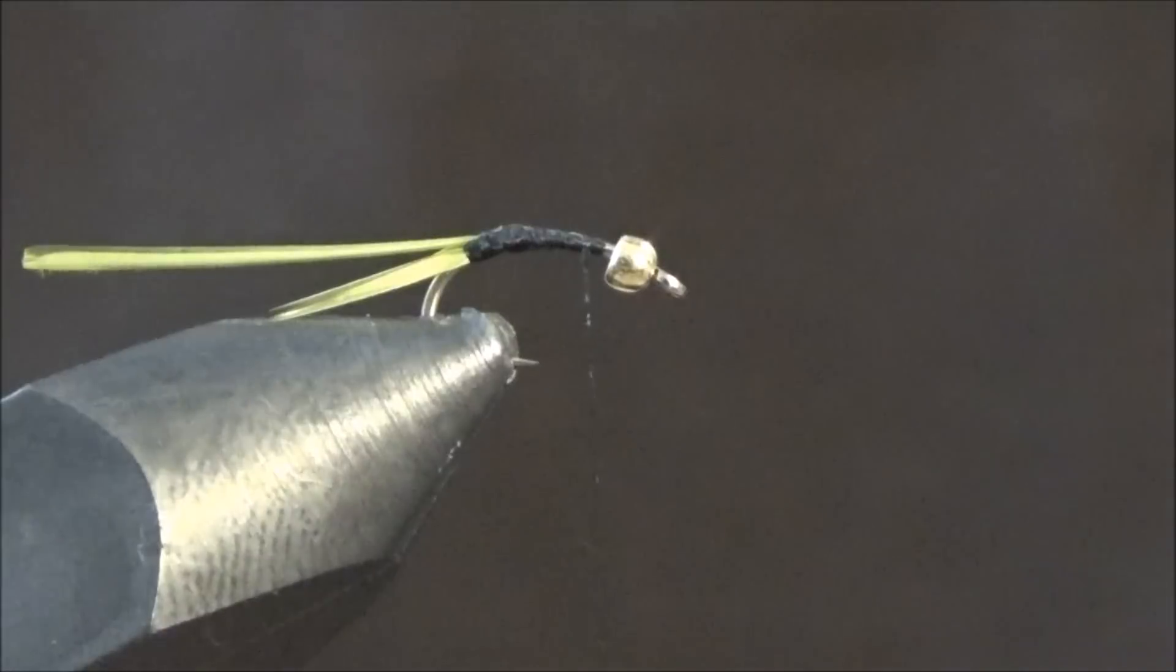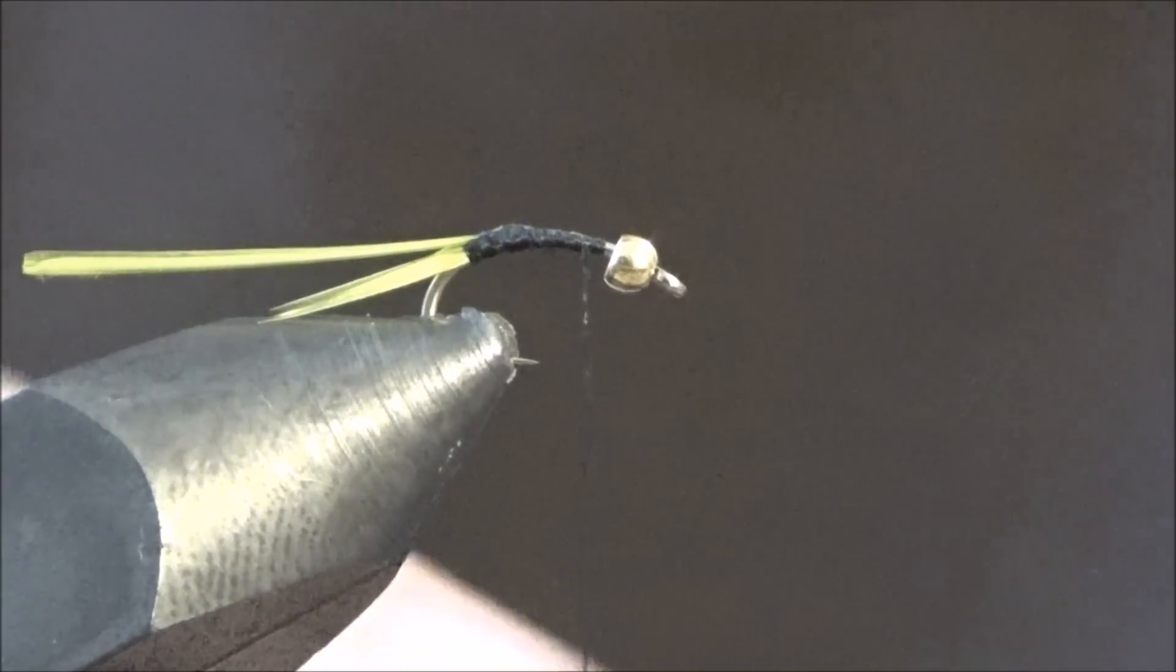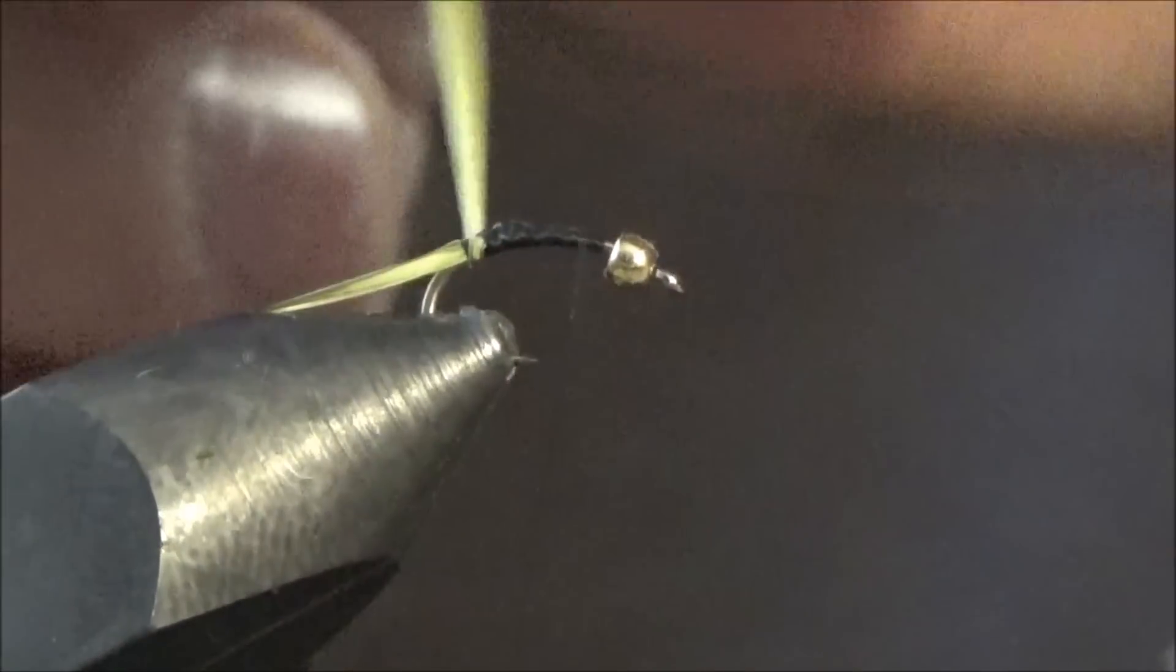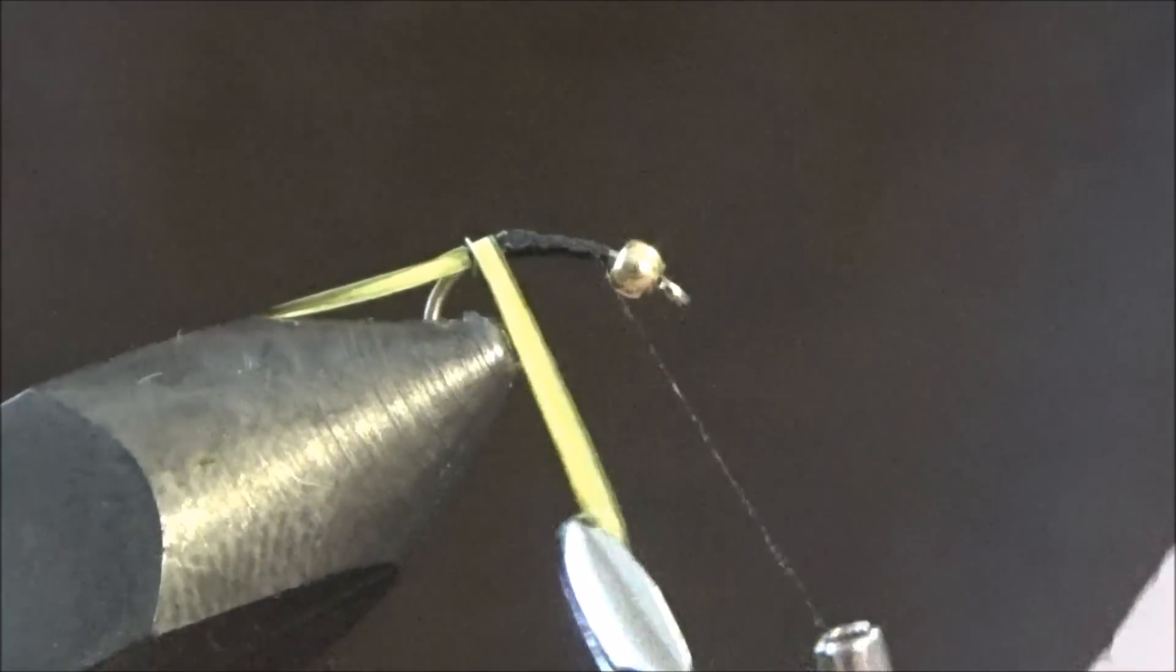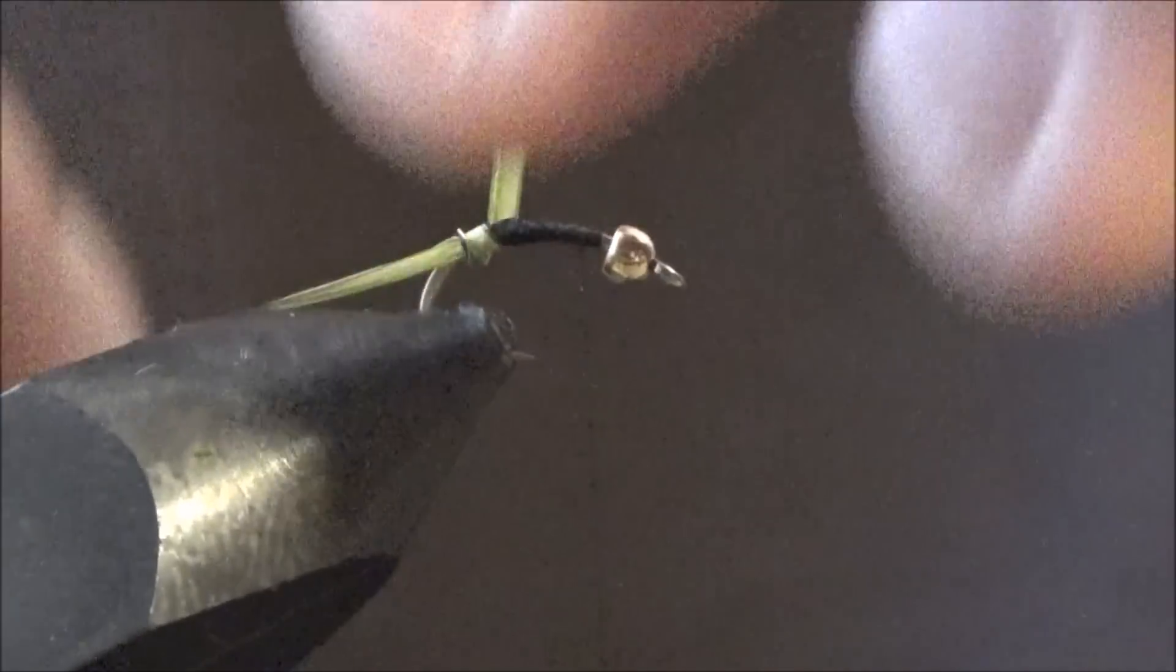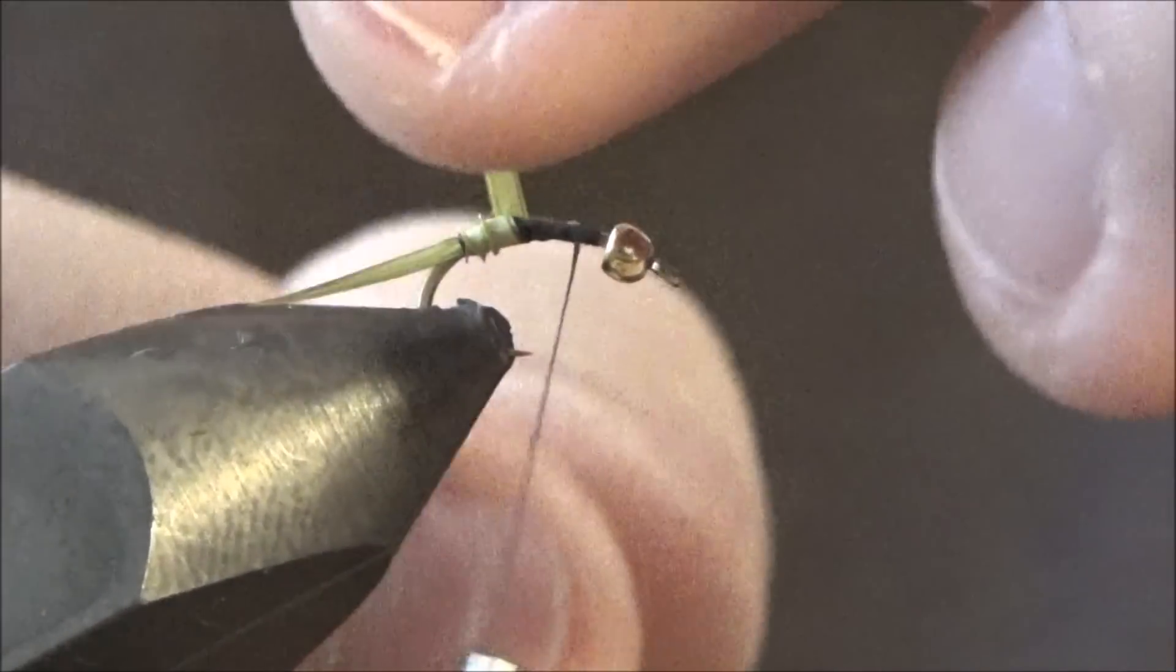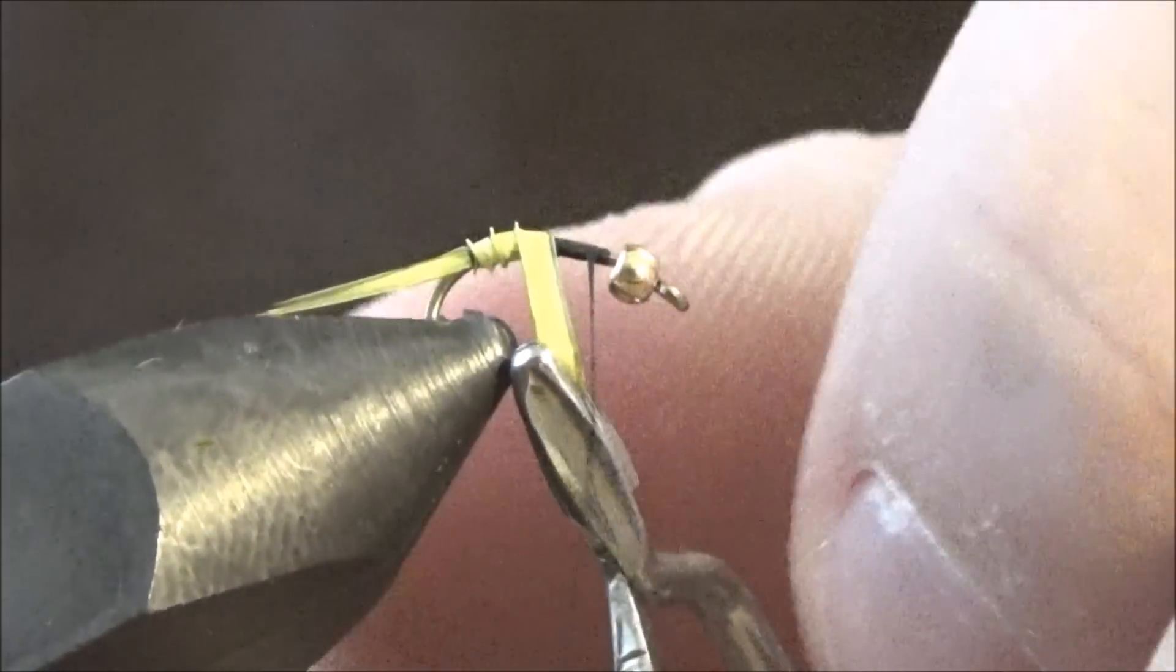Okay, now take your thread up out of the way, and I like to take a pair of hackle pliers so I can get a good grip on them. It takes some practice to get the biot correct. There. You can see how the ridge is popping up, gives it a rib effect.